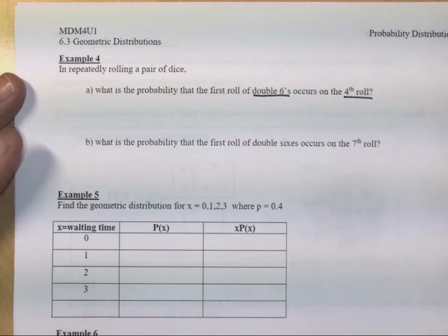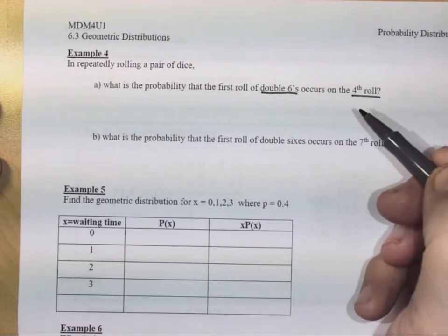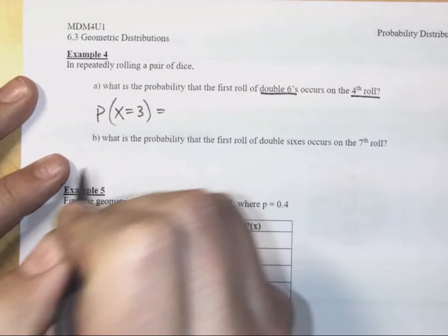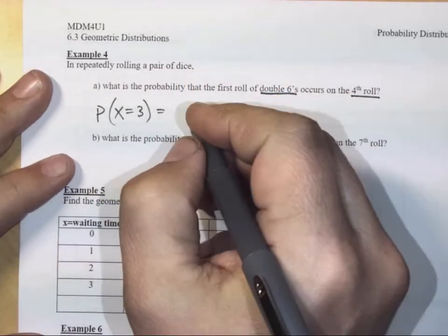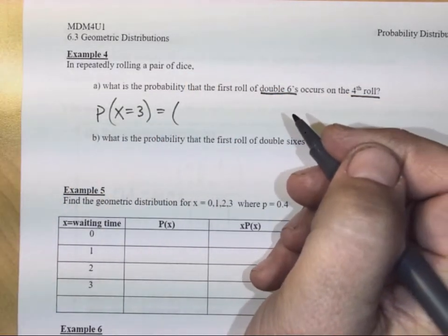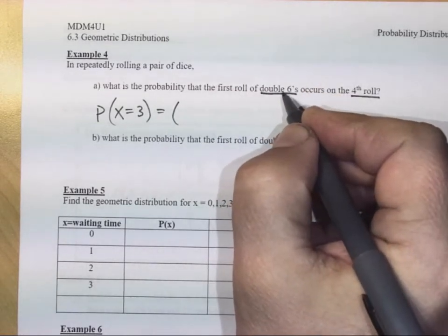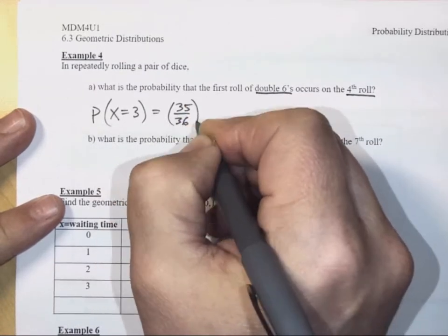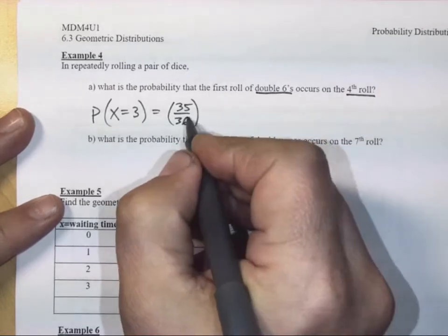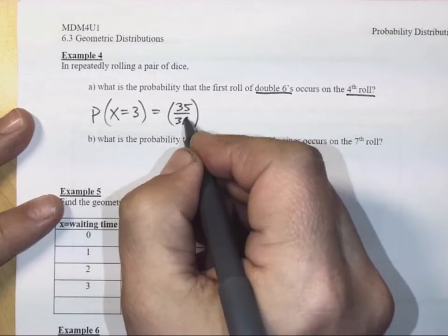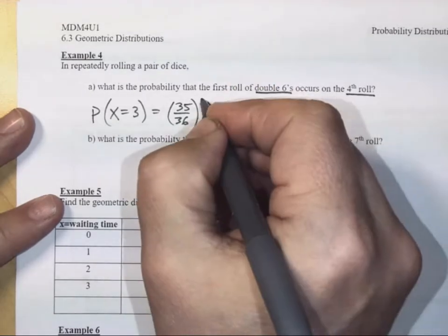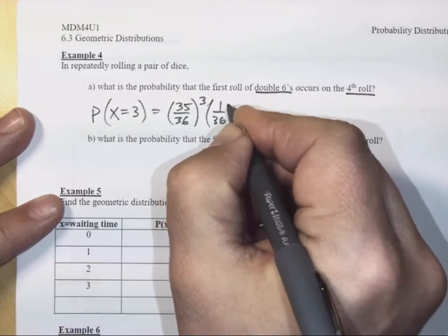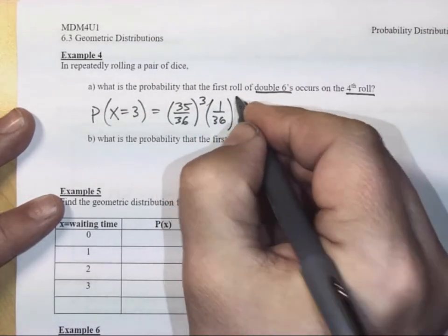Well, if it happens on the fourth roll, how many times do we have to wait for this double six to occur? Three times. You guessed it. So the probability of X equals three, that's our waiting time, is equal to the probability of failure. Well, if I roll a double six, that's a one in 36 chance. There must be a 35 in 36 chance that I don't roll a double six. And how many times did I have to fail? If it happened on the fourth roll, I failed three times, that's equivalent to this, or it matches this, I mean. Three times a one in 36 chance of rolling a double six.